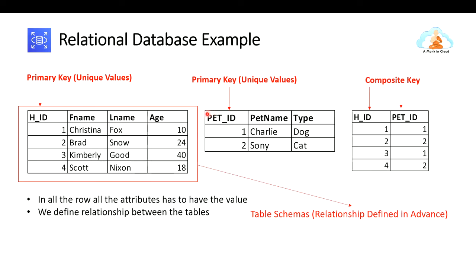Similarly, for the pet table, we can have another dog named Charlie, but the pet ID will be unique — so pet ID is our primary key. Another example: in an organization, employees have salary, first name, last name, and employee IDs. In that scenario, employee ID is the primary key because two employees can have the same name and salary, but employee IDs will always be different.